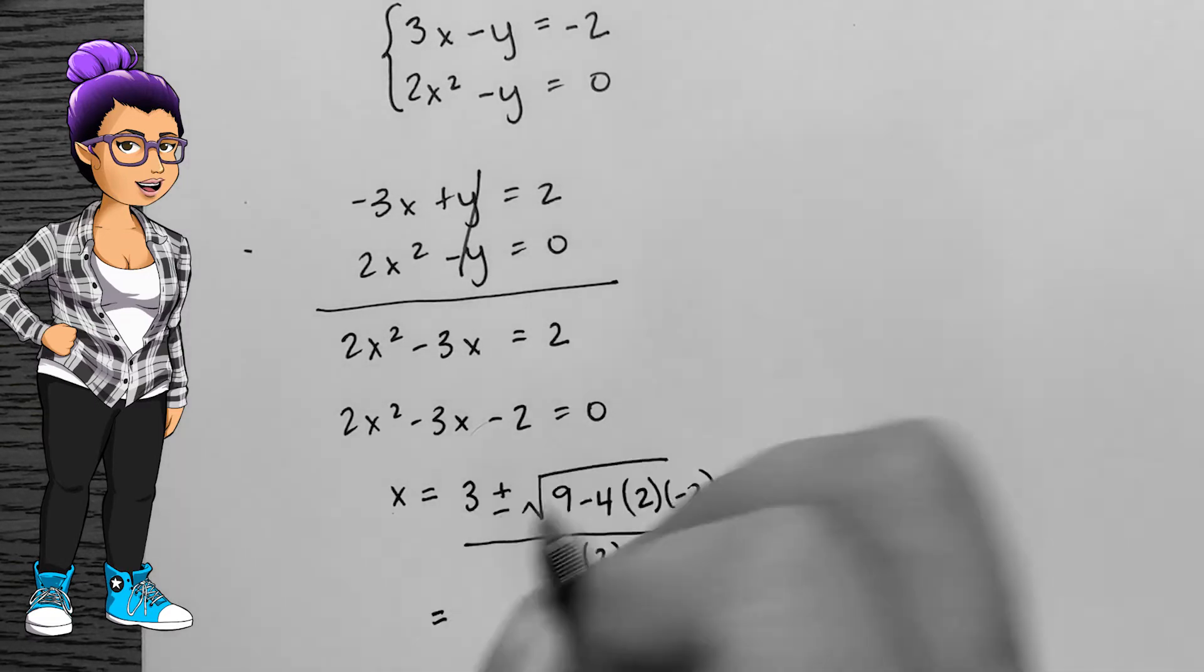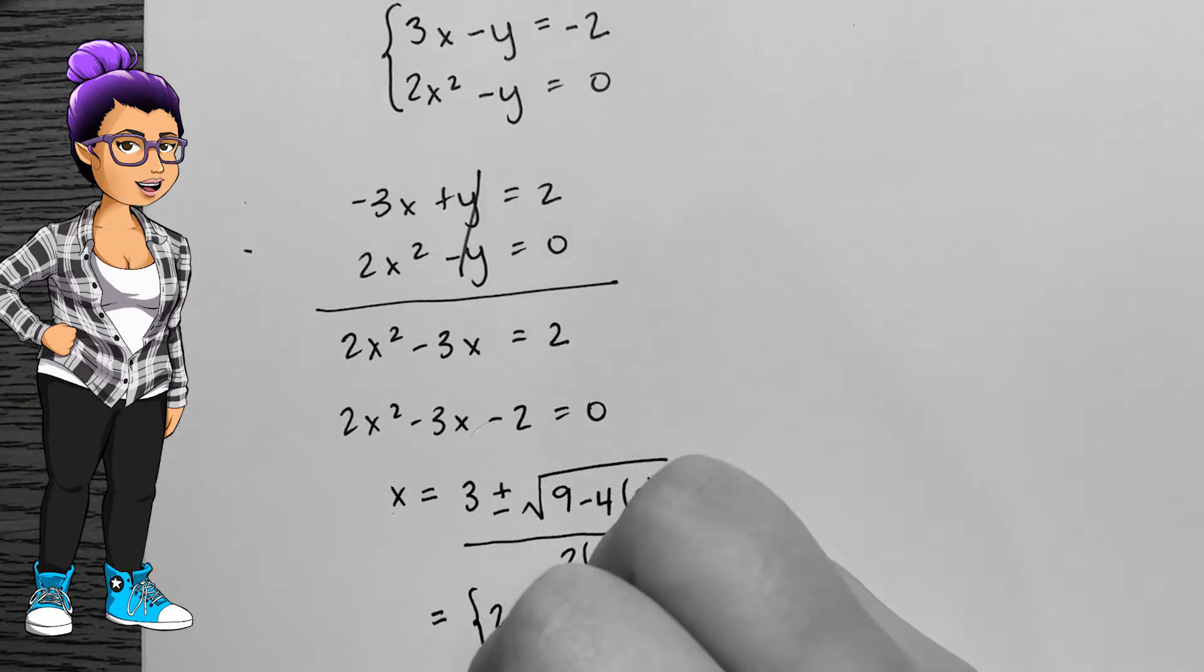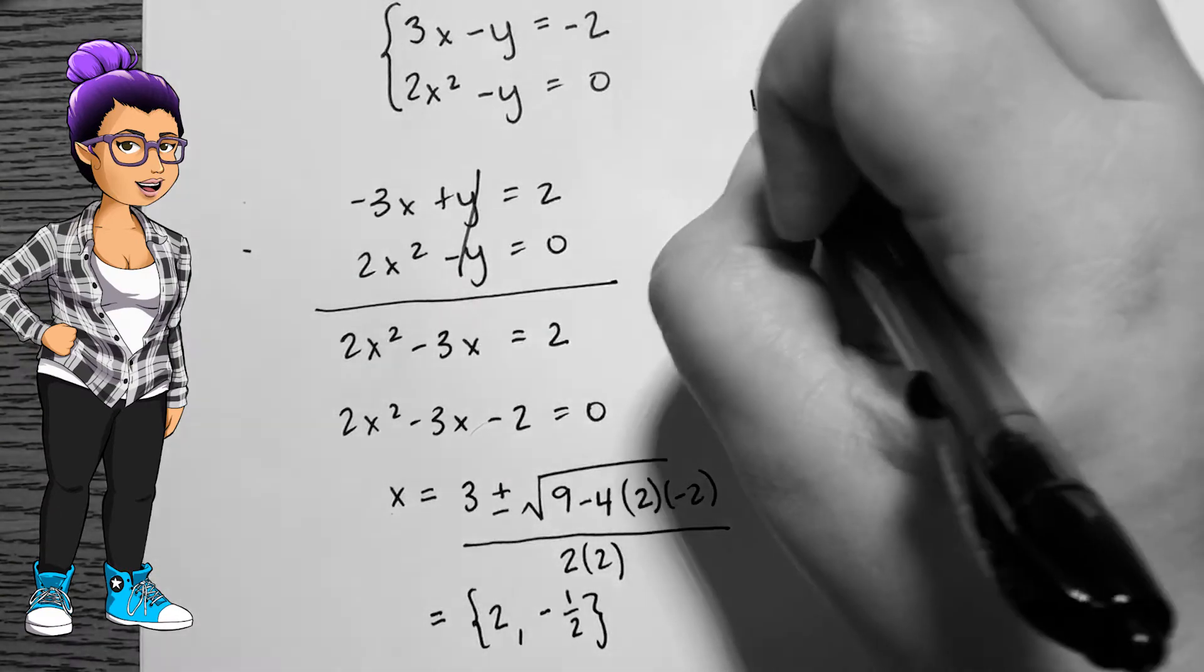Putting this in standard form, I can either factor or use the quadratic formula to see that x is either 2 or negative 1 half.